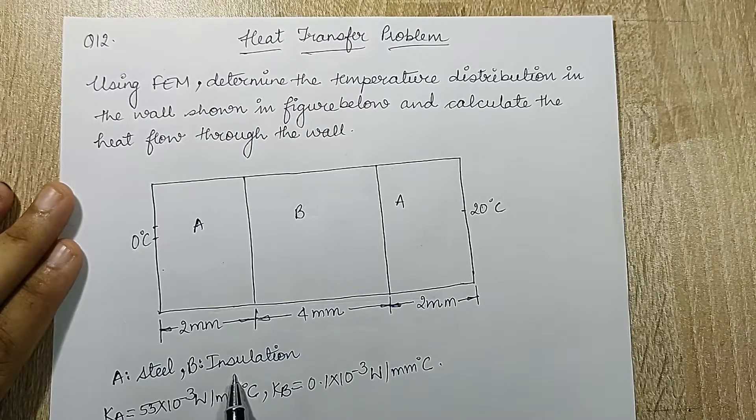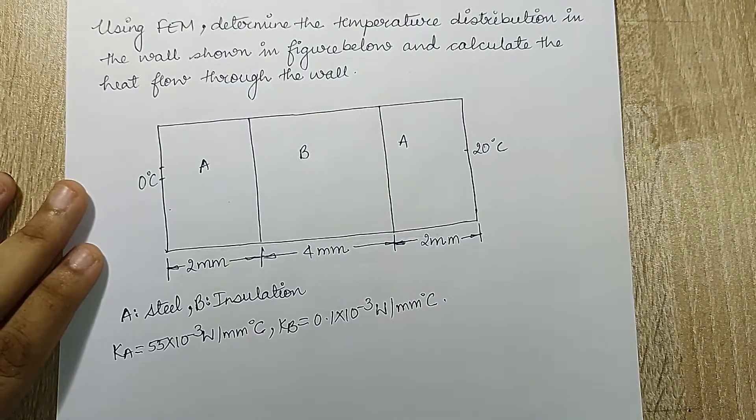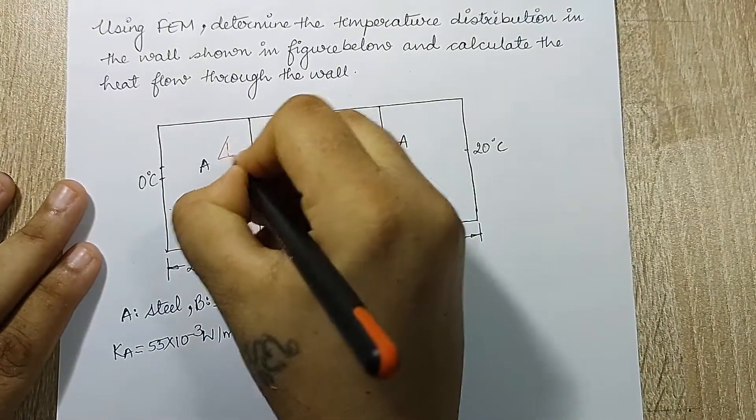And k_B, that is the thermal conductivity for insulation material, is given as 0.1 into 10 raise to minus 3 watt per mm degree Celsius. The first thing that I will do is I will discretize this diagram itself.